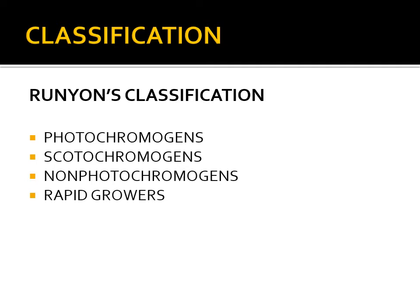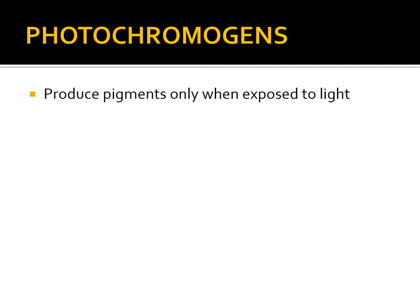Photochromogens are non-tuberculous mycobacteria which produce pigment only when exposed to light. Examples include Mycobacterium marinum, acquired from water sources — it enters through trauma and leads to ulcer formation, known as swimming pool granuloma. Another important one is Mycobacterium kansasii, which can cause chronic pulmonary disease with a presentation similar to tuberculosis.